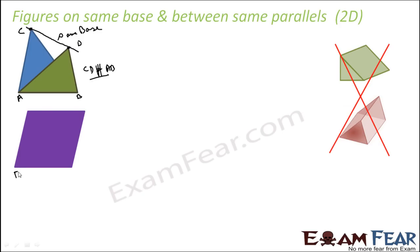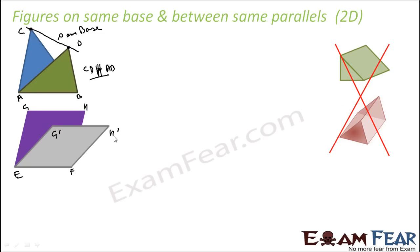Let's take a parallelogram example. Notice both figures have the same base. For them to be between the same parallels, the vertices opposite to the base — let's call them GH and G-dash — should form one straight line, and that line must be parallel to the base EF. Here GH and G-dash are not forming one line, so they are not between the same parallels.